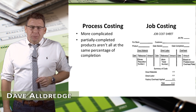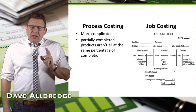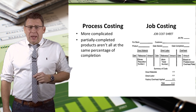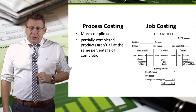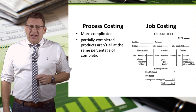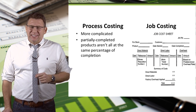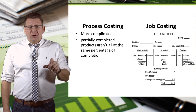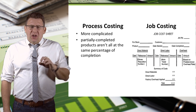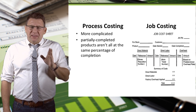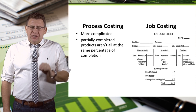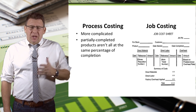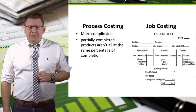In job costing, we know the total cost of partially completed jobs at the end of the period. Process costing isn't as easy to figure out. This is because our partially completed products aren't at the same percentage of completion at the end of the period, like they are in job costing.